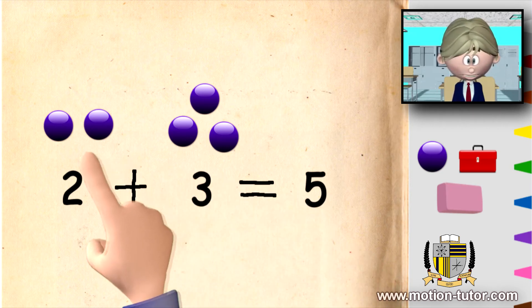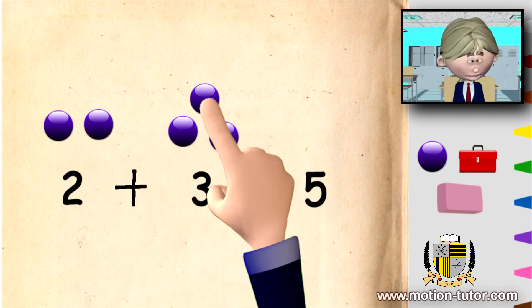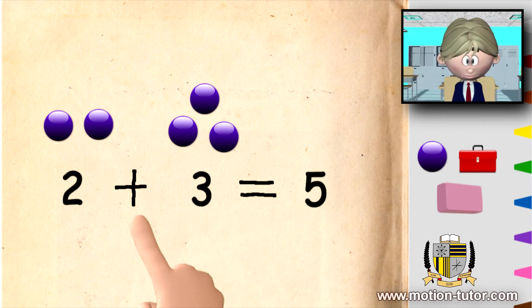And we know this is true because we counted one, two. And three, four, five. All together is five. Two plus three is equal to five.